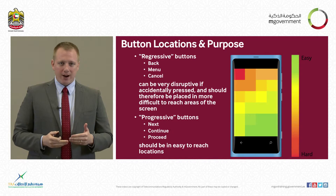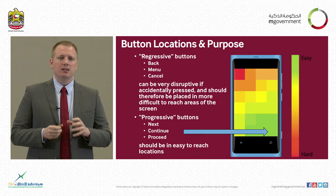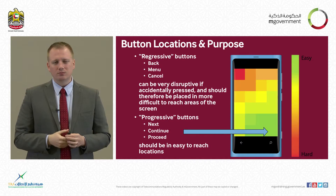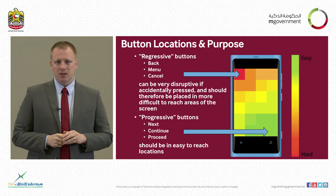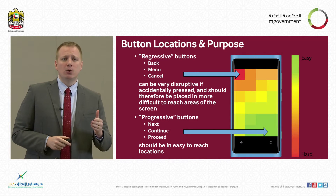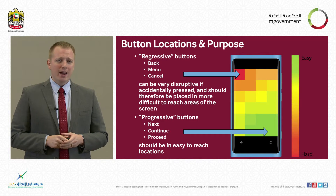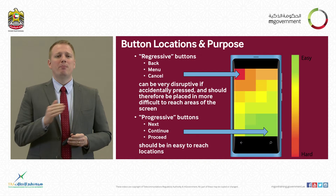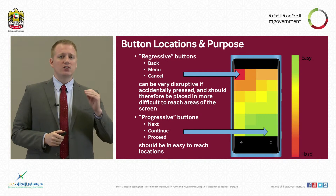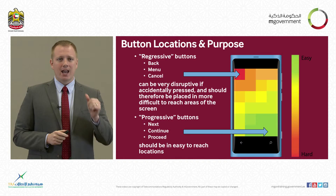Since most of the world is right-hand dominant, consider this heat map of where it is easy or difficult to press buttons. Most progressive buttons — those that continue the process or go to the next step — are more commonly located in the lower right of the screen, where it is easy to tap. However, the top left side is where regressive buttons should go — those that go back or return to the main menu. If you look at most iOS applications on iPhone or iPad, this is exactly where you'll find those buttons, in the upper left corner.